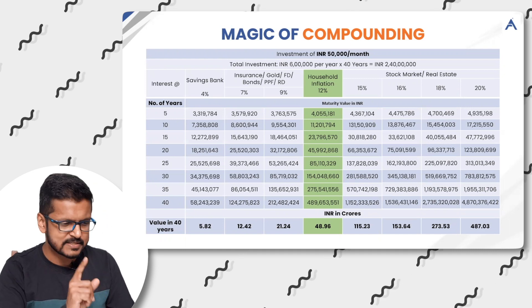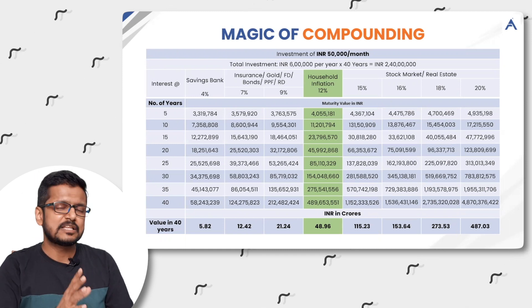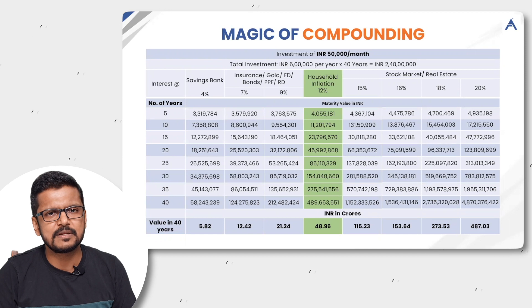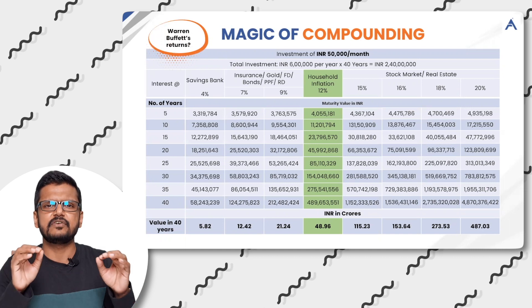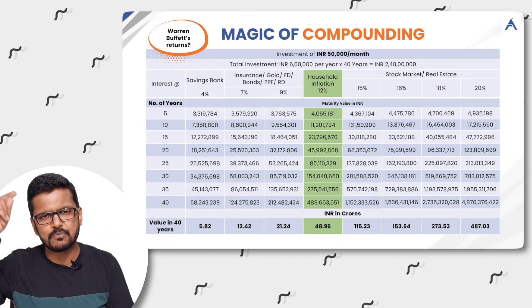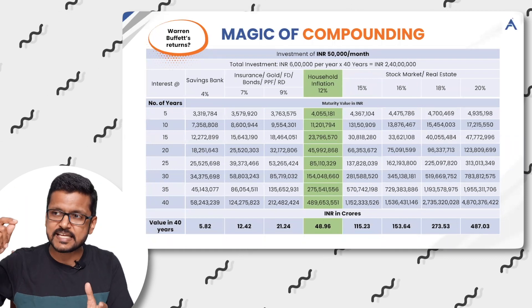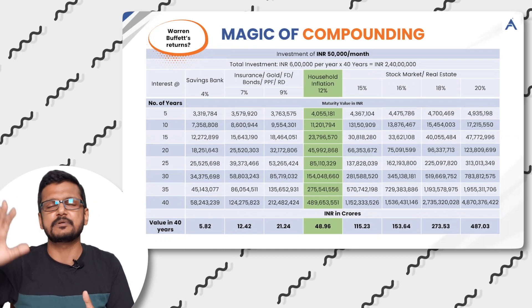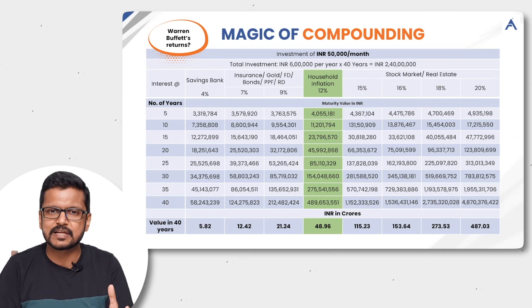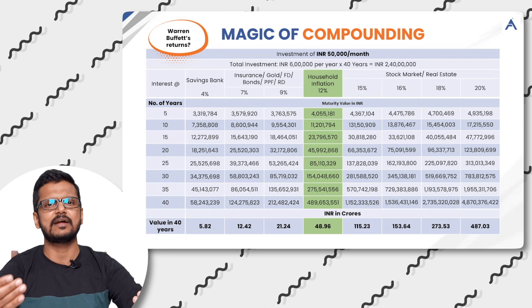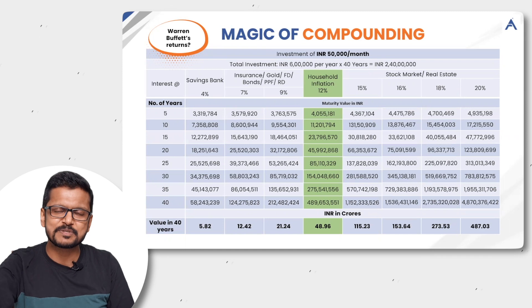Look at the last four figures — 15, 16, 18, and 20%: 115 crores, 153 crores, 273 crores, and 487 crores. Why have I not taken more than 20% returns? The simple reason: Warren Buffett in the last 50–60 years has made a return of around 20 to 21% compounded annually to be where he is today — top 10 richest people. So that's good news for us. Stop chasing 30, 40, 50, 100% kind of returns. It is not sustainable in the long run. You cannot sustain that kind of return for that long.